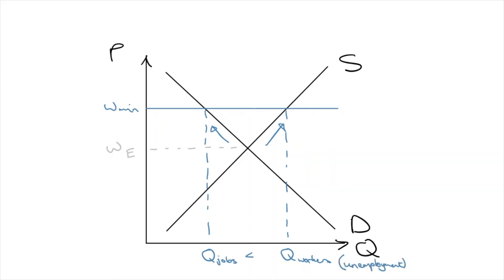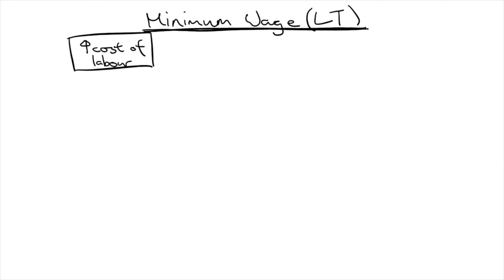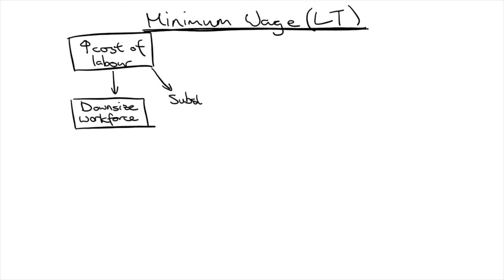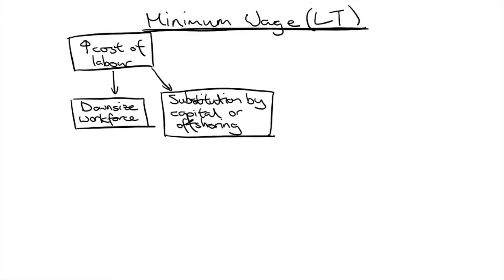This is because if businesses are forced to pay a higher wage to the workers without seeing an increase in productivity, the cost of labour per unit is increased. Eventually, they would respond by downsizing, shutting down the business altogether, or replacing workers with machines. All of these lead to a loss of jobs.